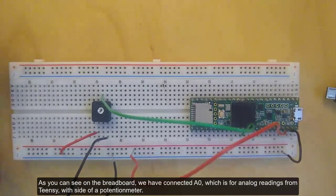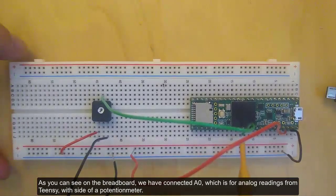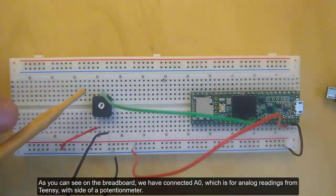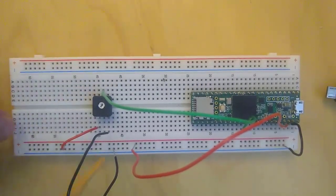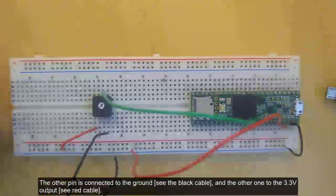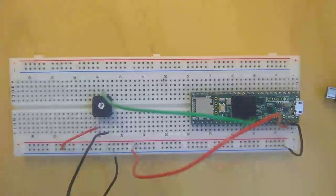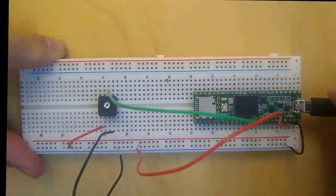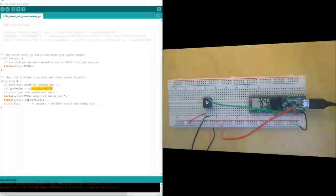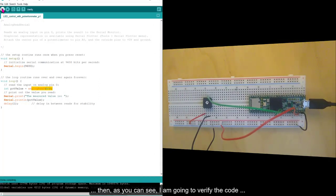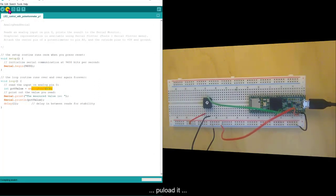As you can see in the breadboard, we have connected A0, which is for analog readings from Teensy, with this side of the potentiometer. The other pin is connected to the ground, and the other one to the 3.3 volts output. I will connect the Teensy. Then, as you can see, I'm going to verify the code, upload it, and I'm also going to see the serial output.